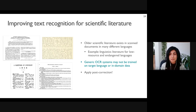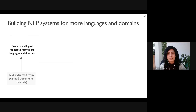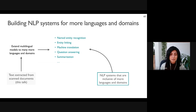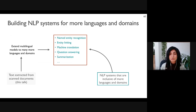Generic OCR systems are likely not trained on data specific to the target language or domain, but while they may provide a good first pass, we can apply OCR post-correction to improve transcription quality. I'm also interested in extending the methods to low-resource domains beyond just low-resource languages. As future work, I'm interested in extending multilingual models to support under-resourced languages and domains using text extracted from scanned documents. These models can then be used to build NLP systems for many more languages and domains.